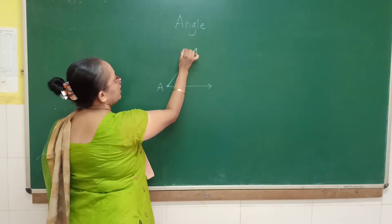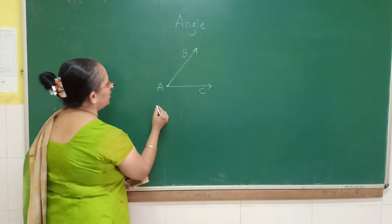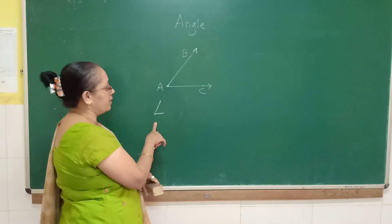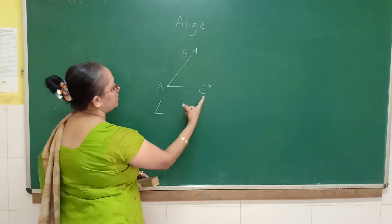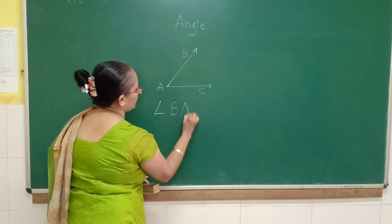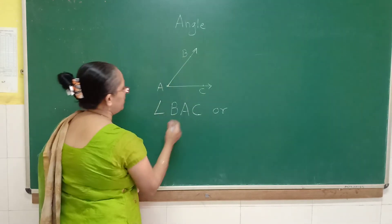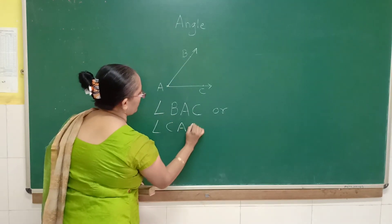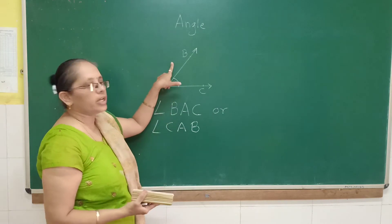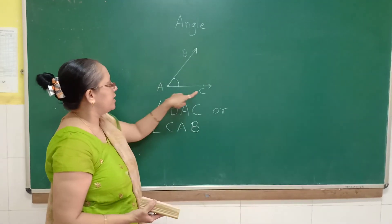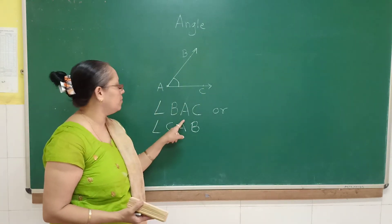Now I will give the angle a name. How to write the name of this angle? This is the symbol used for an angle. We write this angle as angle BAC or angle CAB. The name of the vertex should come in the middle.